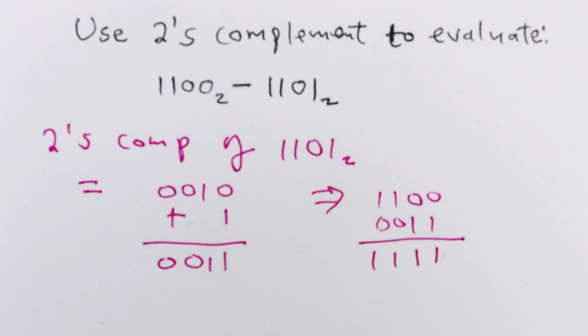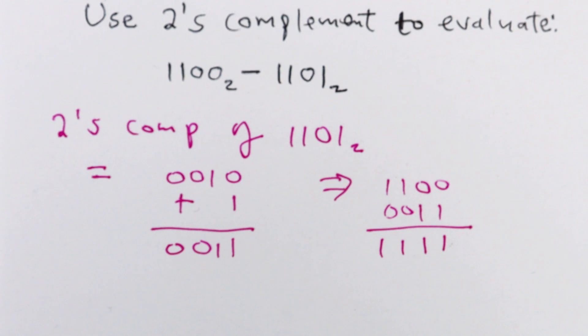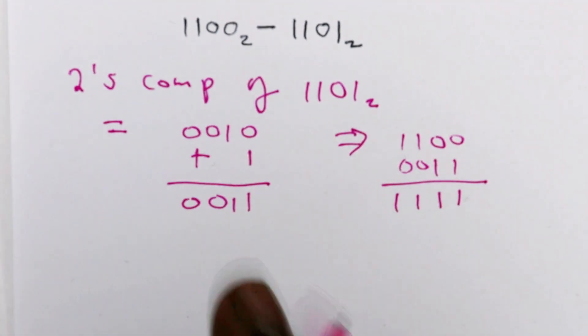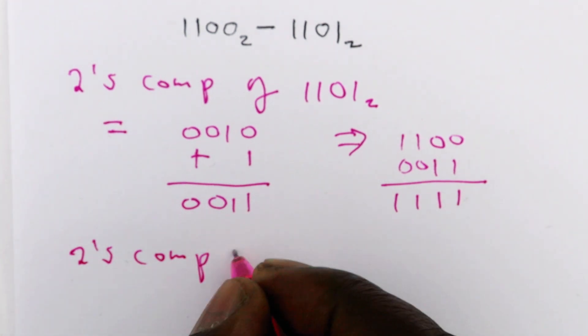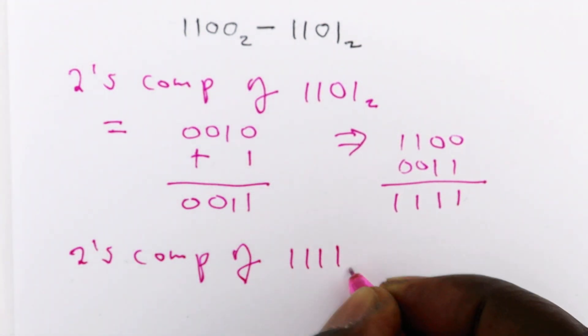Then the next step is to get the 2's complement of this result. So just get 2's complement of 1111.